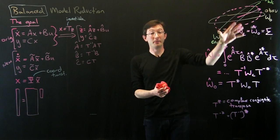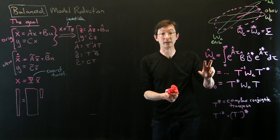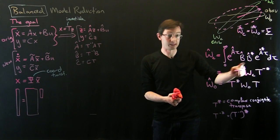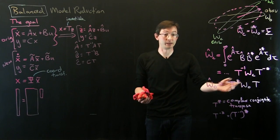And we also saw how that transformed my Gramian. My new controllability Gramian in these new coordinates is this expression in terms of my old Gramian, and my new observability Gramian looks like this also.